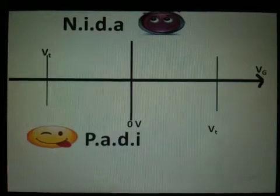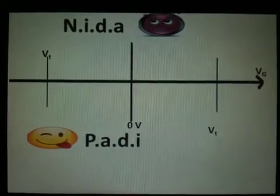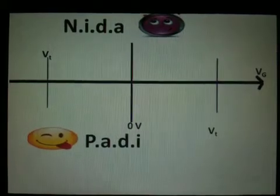Here is a line plot as VG increases. On the top, we will have Nita, or N-type, and below we shall have Patty, or P-type.